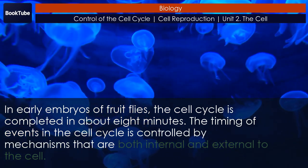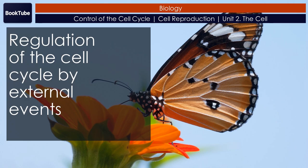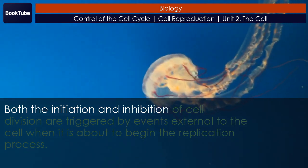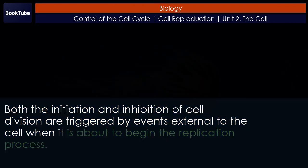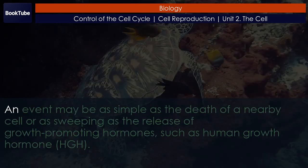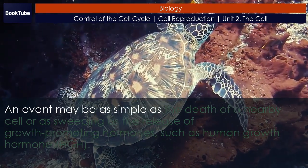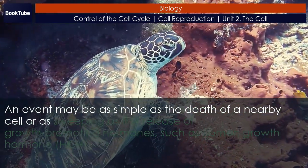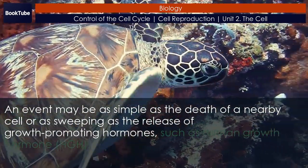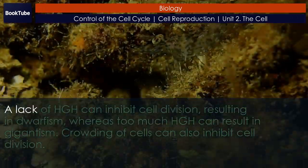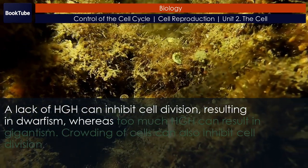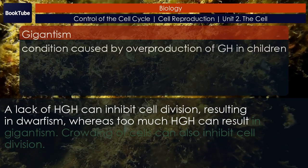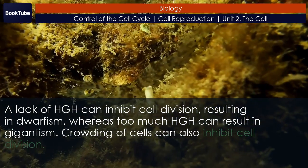The timing of events in the cell cycle is controlled by mechanisms that are both internal and external to the cell. Both the initiation and inhibition of cell division are triggered by events external to the cell. An event may be as simple as the death of a nearby cell or as sweeping as the release of growth-promoting hormones such as human growth hormone (HGH). A lack of HGH can inhibit cell division resulting in dwarfism, whereas too much HGH can result in gigantism.